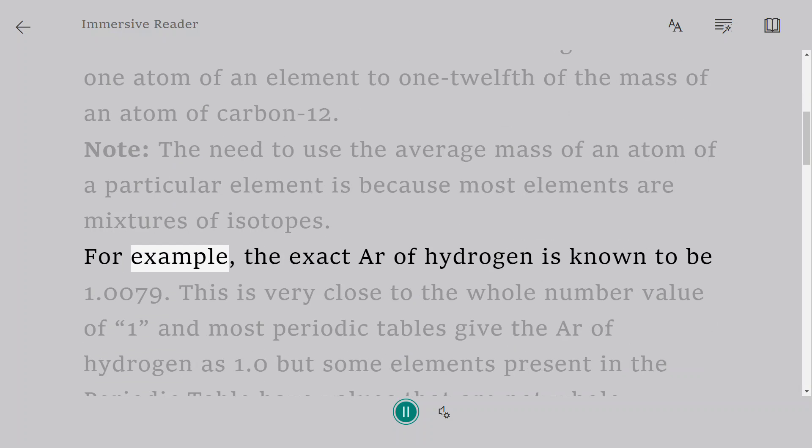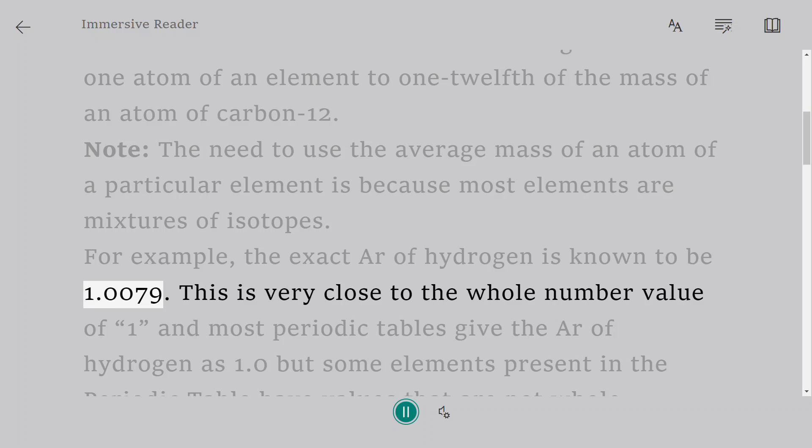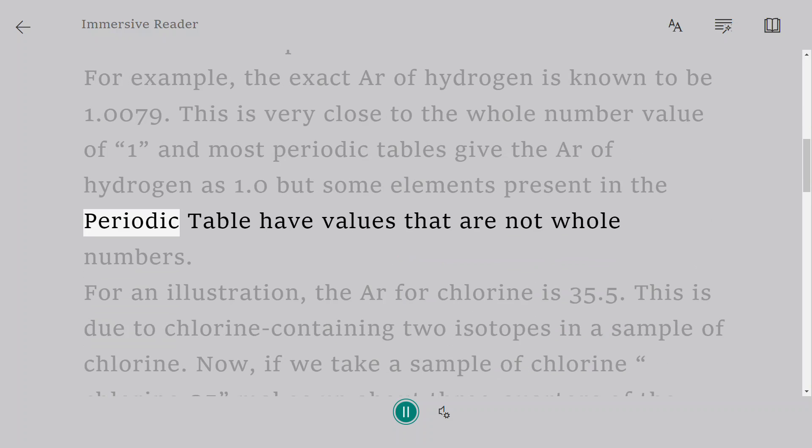For example, the exact Ar of hydrogen is known to be 1.0079. This is very close to the whole number value of 1, and most periodic tables give the Ar of hydrogen as 1.0, but some elements present in the periodic table have values that are not whole numbers.